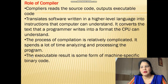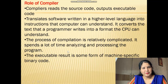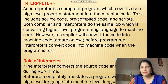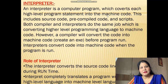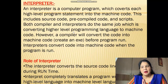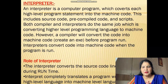The process of compilation is relatively complicated — it spends a lot of time analyzing and processing the program. The executable result is some form of machine-specific binary code. Next is the interpreter. An interpreter is also a computer program which converts each high level programming language statement into machine code. Both compiler and interpreter do the same job of converting high level programming into machine code. However, the compiler converts the code into machine code before the program runs, while the interpreter converts code into machine code when the program is running.